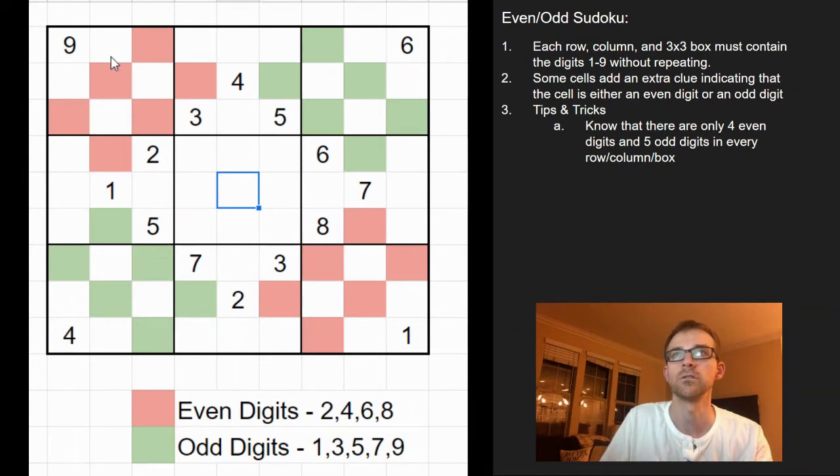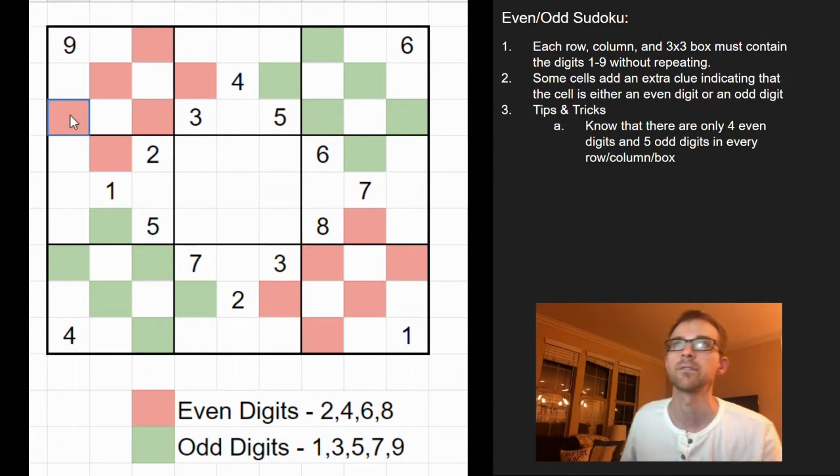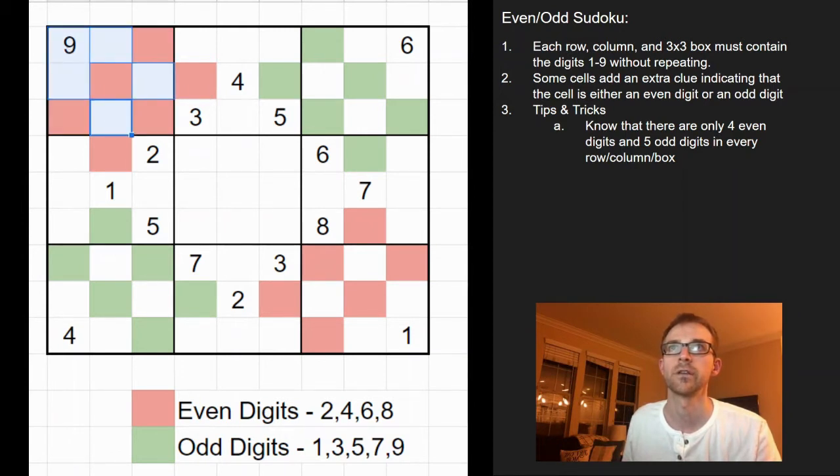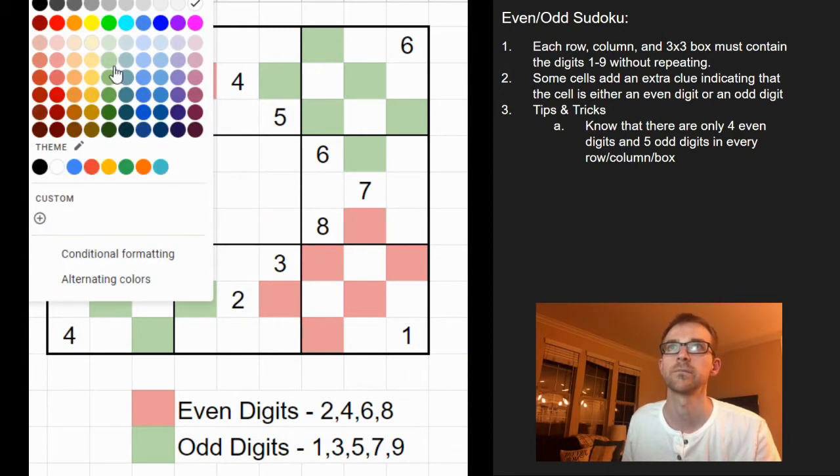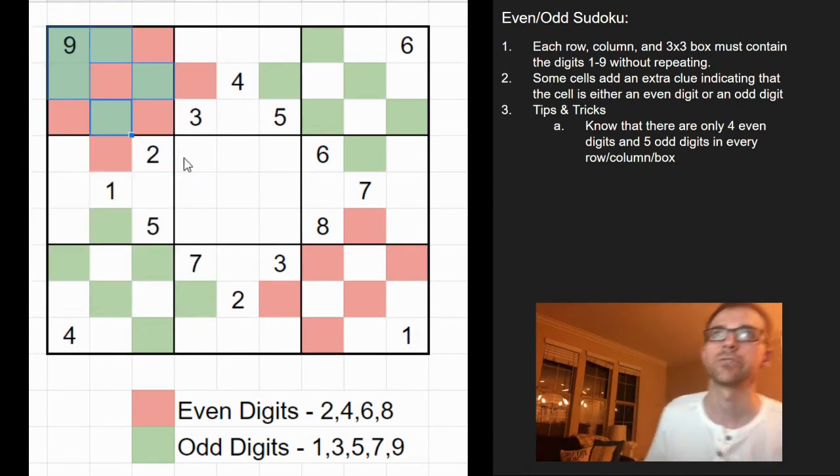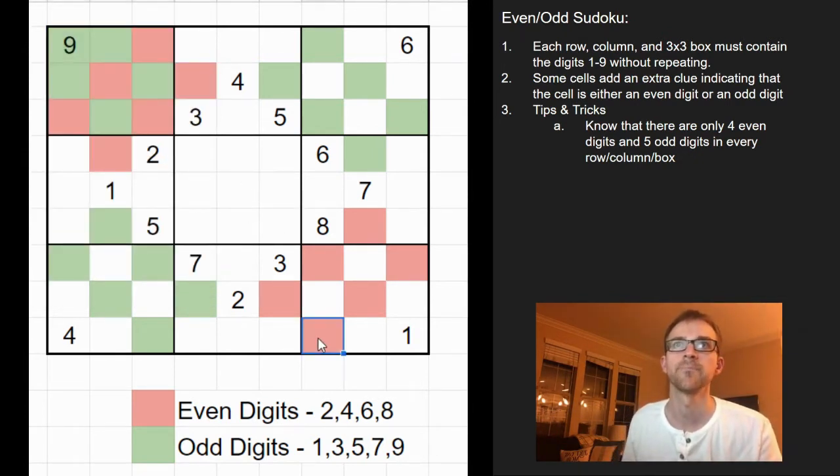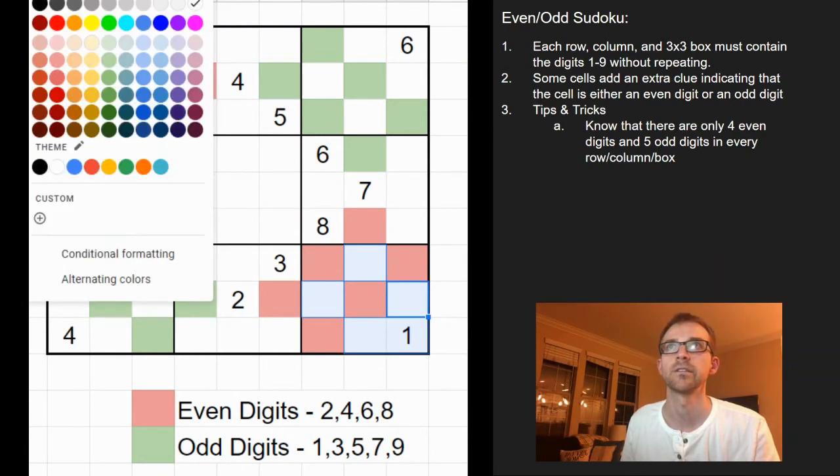And what you can do is if you look at this box in the top left, they already tell you that these are the 4 even digits. So that's really helpful because you know that all these other cells then are going to be odd digits. And I'll color those in so it will be a little bit more helpful to the eye. And the same thing can be done here in the bottom right. So 4 even digits are there, therefore all of these other cells must be odd digits.